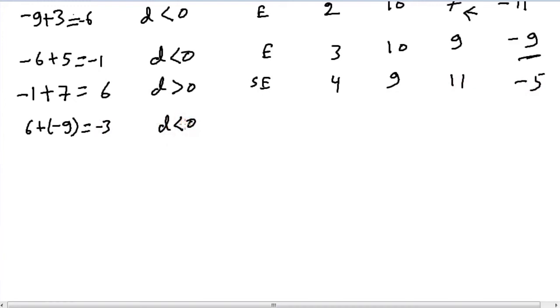So we have d < 0 yet again which is E. Our x coordinate goes up by 1, y coordinate remains the same because we chose E.